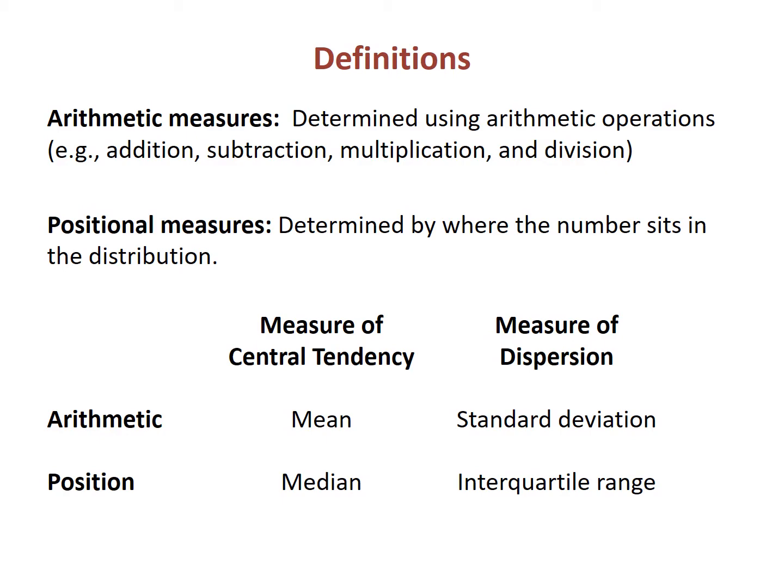The mean and standard deviation are the arithmetic measures of central tendency and dispersion, and the median and interquartile range are the positional measures. We will also look at some other statistics that can be used in conjunction with the measures of central tendency and dispersion.